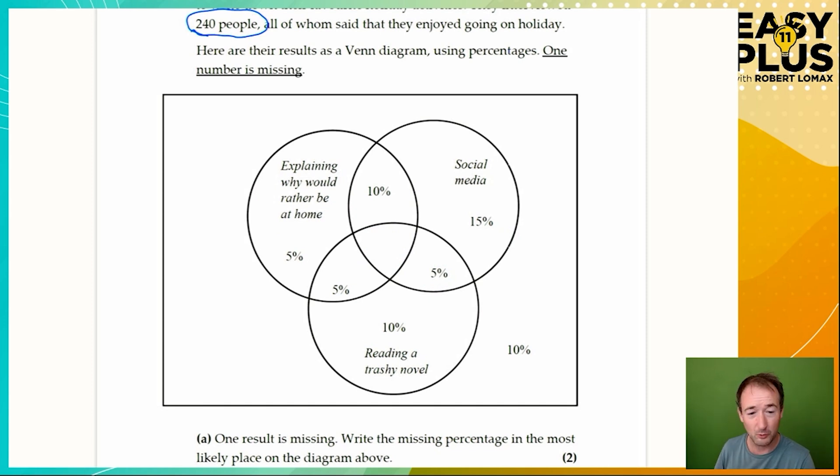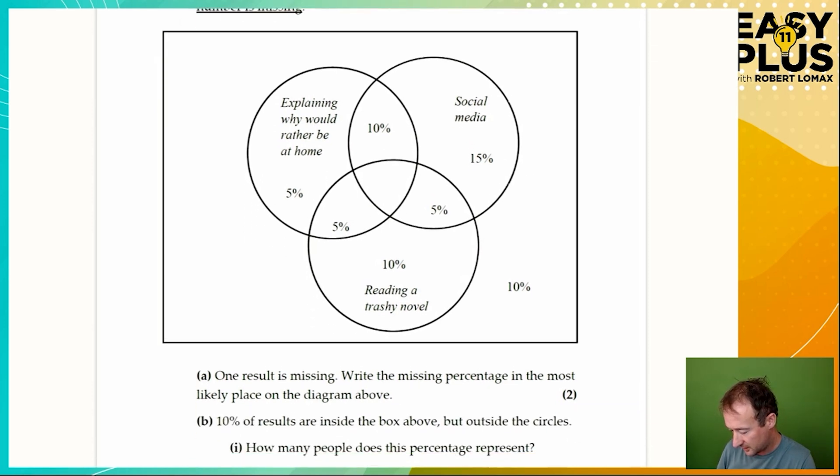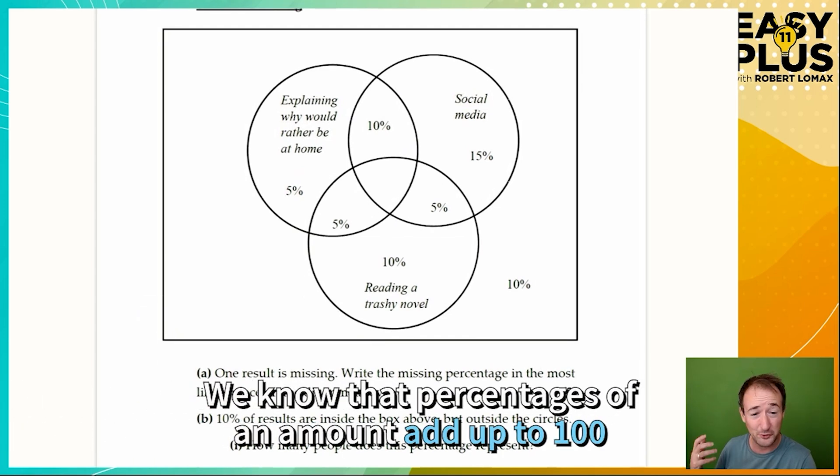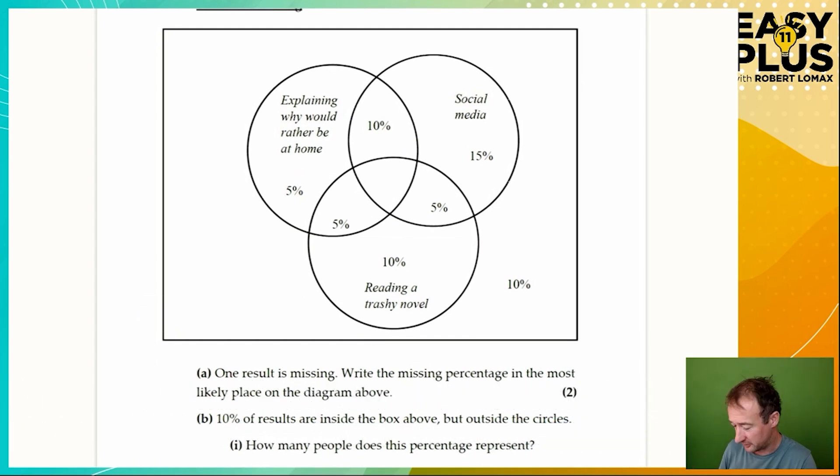There's one point where we are clearly missing a percentage, and that is here. This is in the part that overlaps all three circles. This must be the place for people who referred to all three of these things. Now these are percentages, so they need to add up to 100%. Let's add all of these together: 10 and 15 is 25, plus 5 is 30, plus 10 is 40, 50, 55, 60. So what must be missing here? It must be 40%.